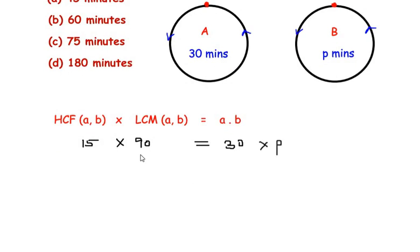Now let us take 30 on the other side of the equal to sign. So we get p is equal to 15 times 90 divided by 30. So 30 cancels 90, that is 3 times 1 is 3 and 3 times 3 is 9. So p is equal to 15 times 3 which is 45 minutes.